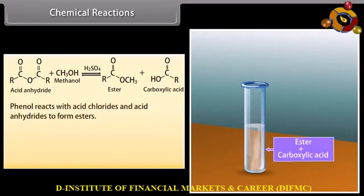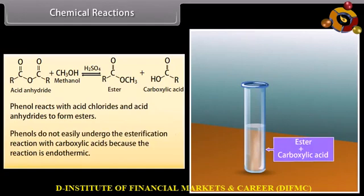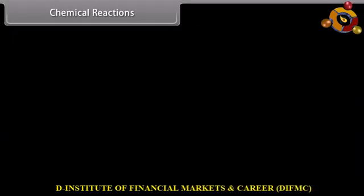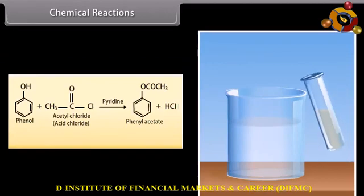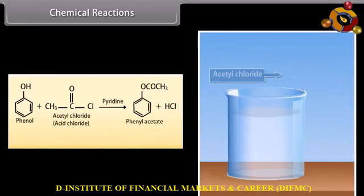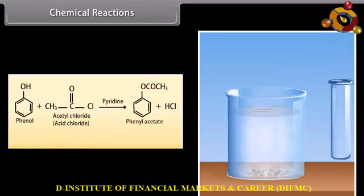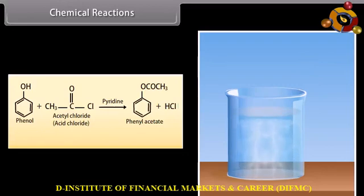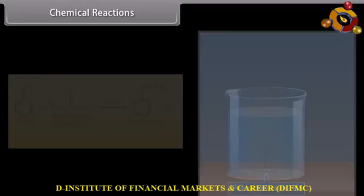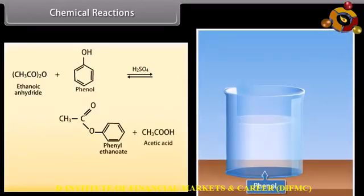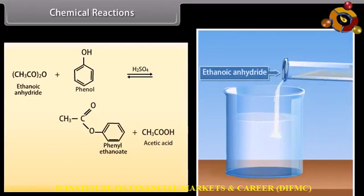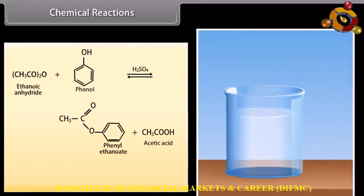Phenol reacts with acid chlorides and acid anhydrides to form esters. Phenols do not easily undergo the esterification reaction with carboxylic acids because the reaction is endothermic. Phenol reacts with acetyl chloride in the presence of pyridine to form phenyl acetate and hydrochloric acid.